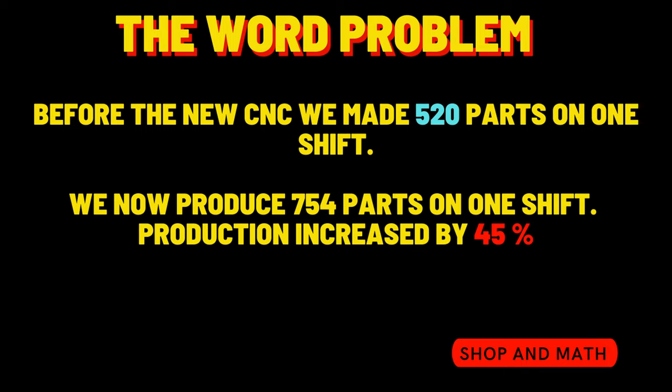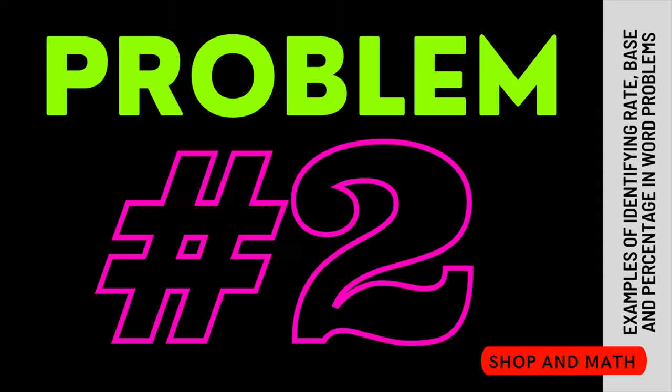Before the new CNC machine, we made 520 parts on one shift. Now production has increased to 754 parts on one shift — that's an increase of 45%. Problem number two.